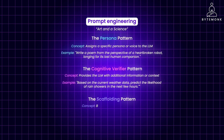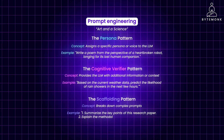The scaffolding pattern breaks down complex prompts into smaller, more manageable steps or questions, guiding the LLM towards a structured and informative response. For example, a three-step breakdown: summarize the key points of this research paper, explain the methodology used in the study, and discuss the potential implications of the findings. The benefit of this pattern is that it improves the clarity, coherence, and organization of the LLM's output, especially for complex tasks.